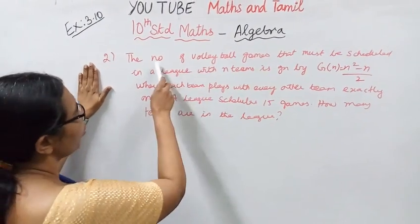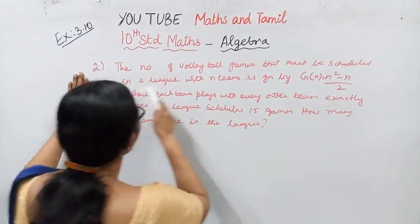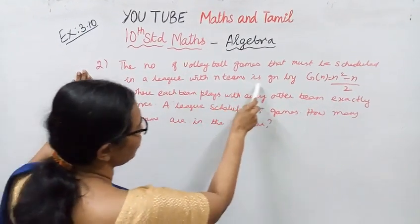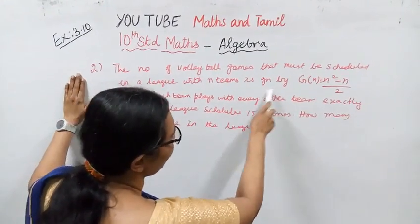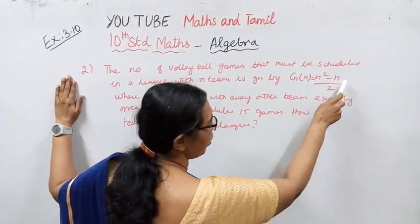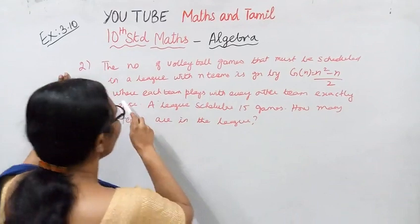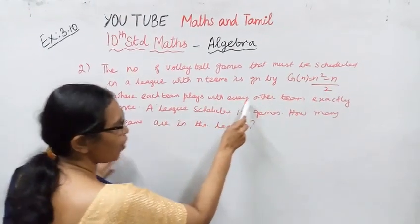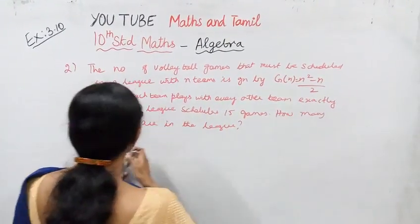The number of volleyball games that must be scheduled in a league with n teams is given by g(n) = n² - n/2, where each team plays with every other team exactly once.